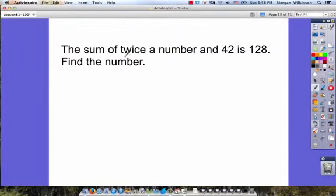So the sum of twice a number and 42. Sum means add, and we're adding 42 to twice a number. So we're going to get 2n, twice a number, plus 42, because we're finding the sum, is, that must mean equal to, 128.